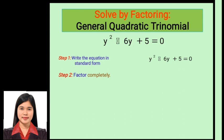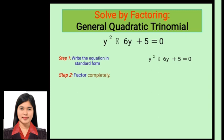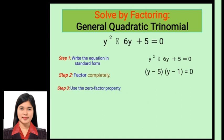Step 2 is to factor completely. Can we factor the expression on the left side? Yes, we can express it as the product of two polynomial factors. The factors are (y minus 5)(y minus 1) equals 0. Since the product of those two factors is 0, according to the zero product rule, one of the factors must equal 0. So we have y minus 5 equals 0 or y minus 1 equals 0.